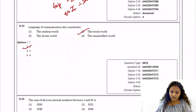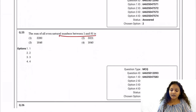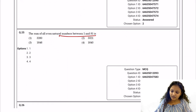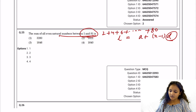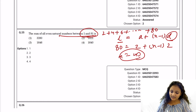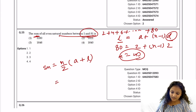Question 24: The sum of all even natural numbers between 1 and 81. Using arithmetic progression: the series is 2 + 4 + 6 + … + 80. Here a = 2, l = 80, d = 2, giving n = 40. Sum equals n/2 × (a + l) = 40/2 × (2 + 80) = 20 × 82 = 1640.